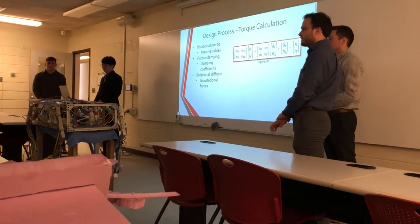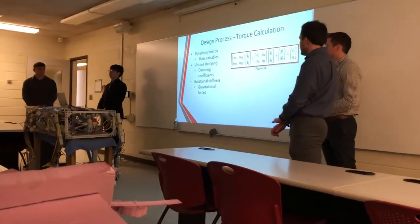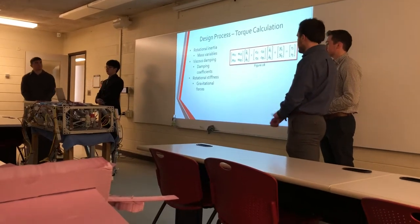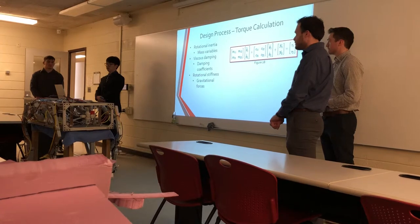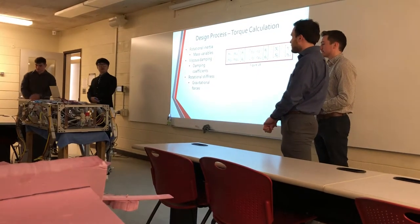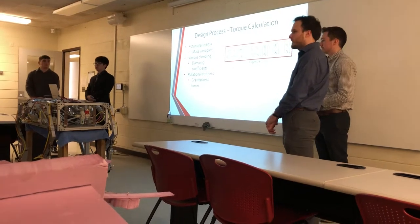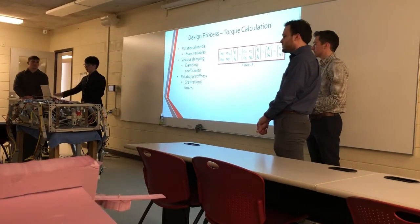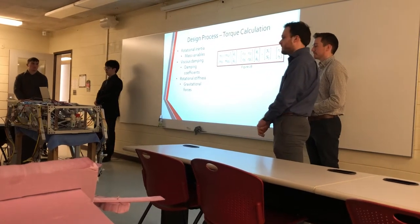A torque is generated as each line goes through the phase. The ideal value of this torque can be calculated using the equation seen in figure 28, where the M matrix is the rotational inertia associated with the mass variables of the system. The C matrix is the viscous damping associated with the damping coefficients, and the N matrix is the rotational stiffness, which directly pertains to the gravitational forces on the system.